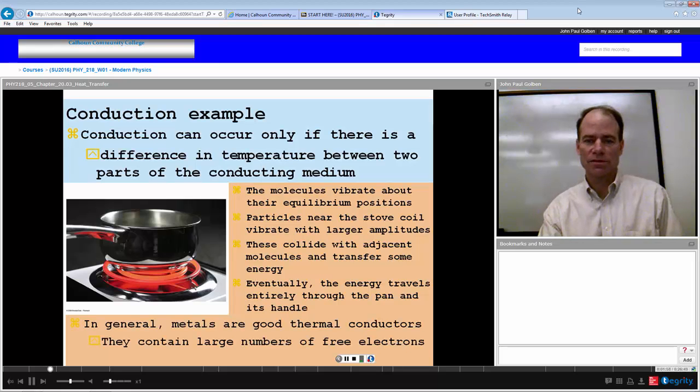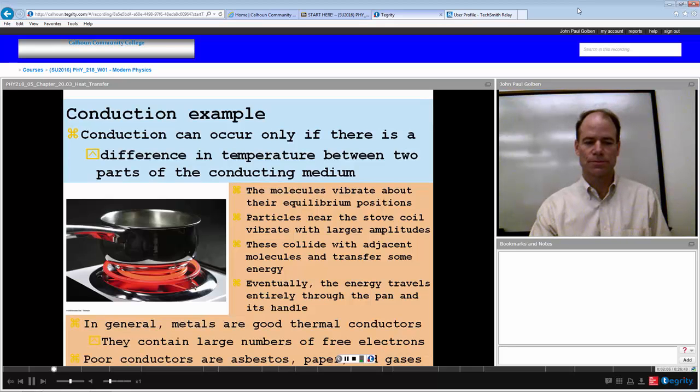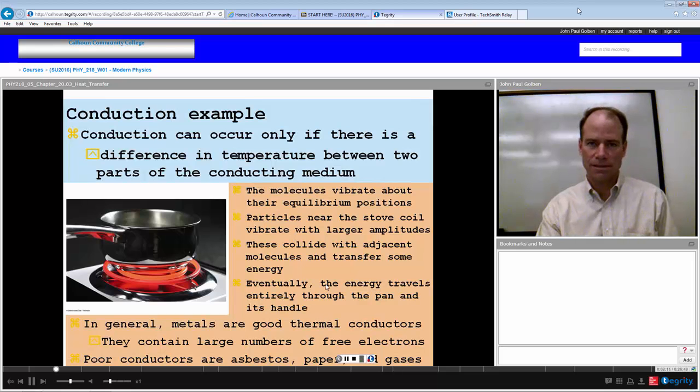In general, metals are good conductors because they contain a lot of free electrons, and the free electrons can transfer this energy more easily. Poor conductors would be asbestos, paper, and gases themselves.